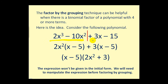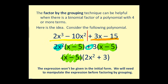We do the same thing on the right side. If we factor out the greatest common factor of three, we'll notice we have another binomial factor of x minus five. The idea behind factor by grouping is that we will always have a common binomial factor. So if we factor x minus five out of these two products, we are left with two x squared plus three, which is our other factor of the original polynomial.